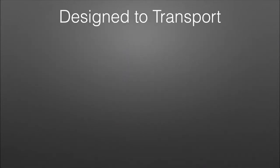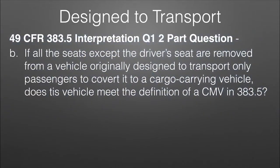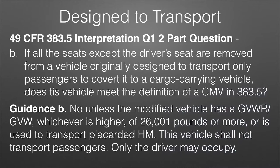The second part of 'designed to transport' is interesting. Part B says: if all of the seats except for the driver's seat are removed from a vehicle originally designed to transport only passengers — to convert it to a cargo carrying vehicle — does it meet the definition of 383.5? The guidance says: no, it does not, unless the modified vehicle has a gross vehicle weight rating or gross vehicle weight — whichever is higher — of 26,001 pounds or more.